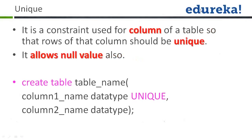Moving on, we come to unique. It is a constraint used for a column of a table so that rows of the column should be unique. It allows null values, but only one time — the value should be unique, it cannot be repeated. When you create a table, whenever you write the column name, you write unique after it — that means this column will take only unique values.